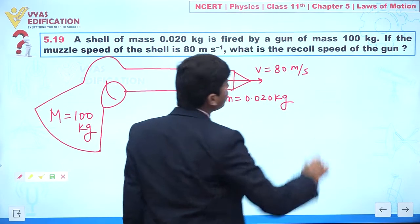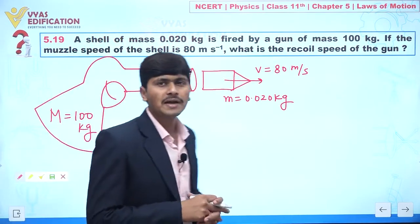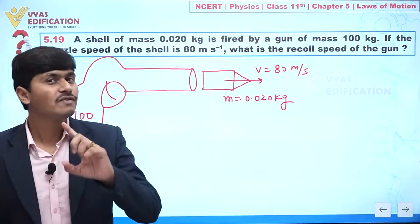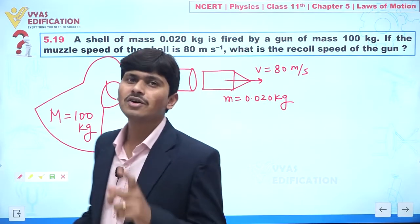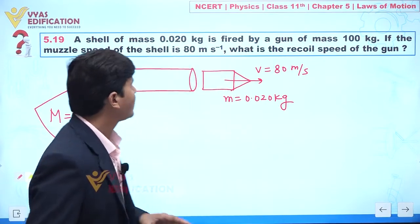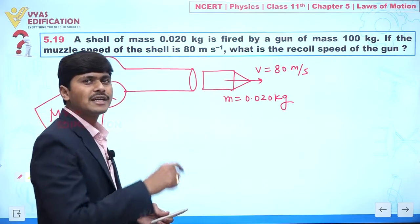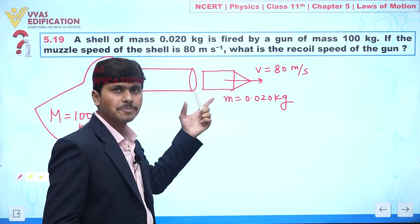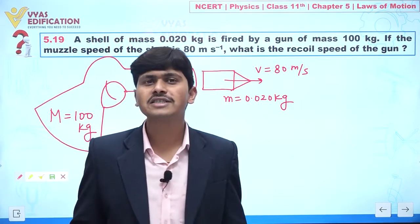We have to find the recoil speed of the gun. Muzzle speed means the velocity of the shell with respect to the gun. Now practically, if the shell is going in the right direction, according to Newton's third law every action has an opposite reaction.